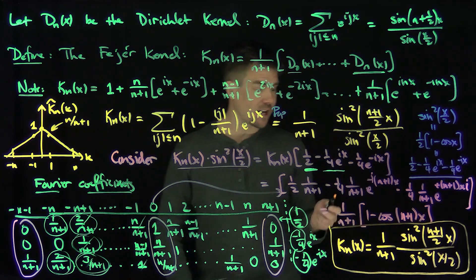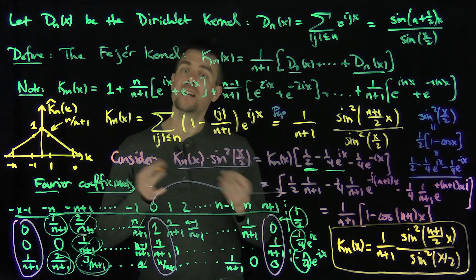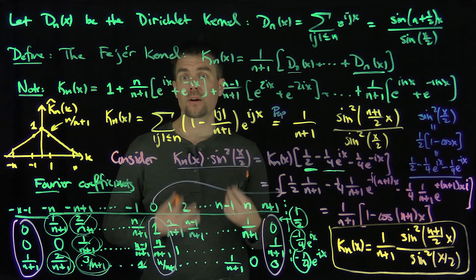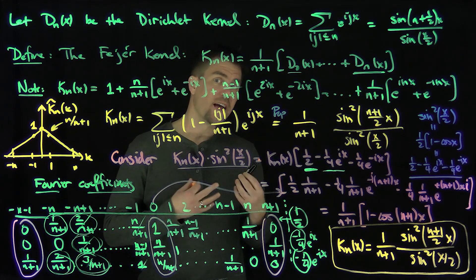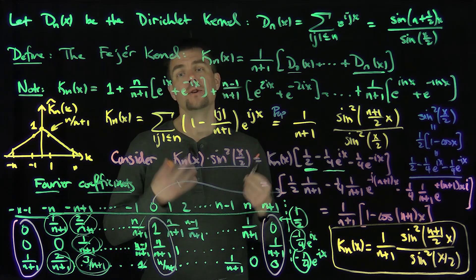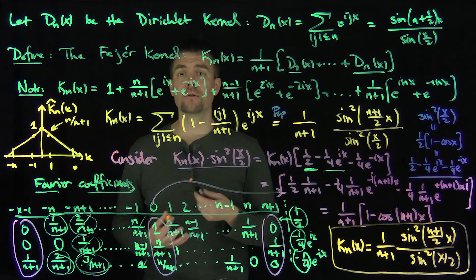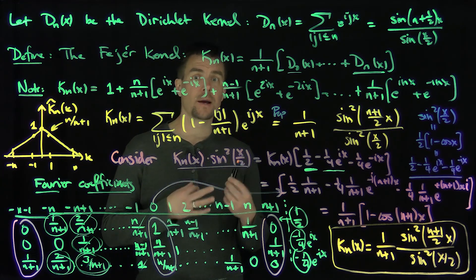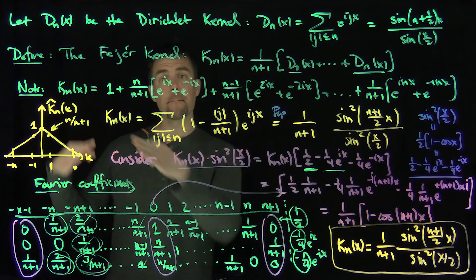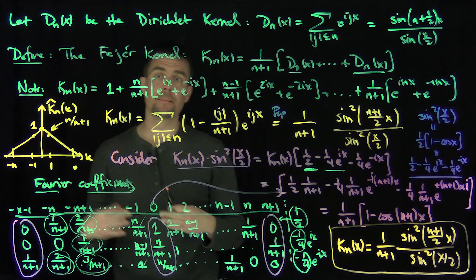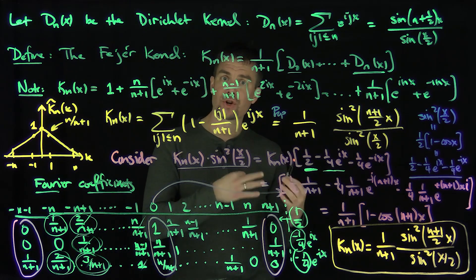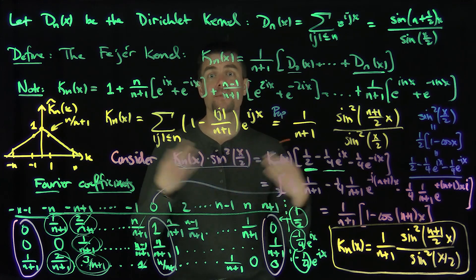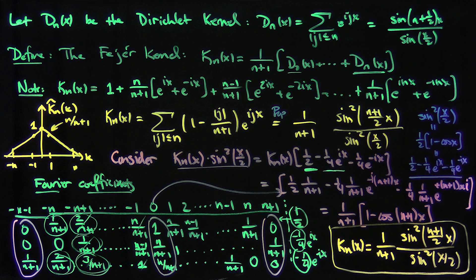This formula is very important in future videos. If we integrate the Fejér kernel over the unit circle and divide by 2π, we get 1, because each Dirichlet kernel integrates to 1, and therefore the Fejér kernel integrates to 1 and is non-negative. This makes it an approximation to the identity: convolution with the Fejér kernels yields trigonometric polynomials that converge at any point of continuity to the function. These averaged partial sums converge uniformly to the function if the function is continuous, whereas ordinary Fourier partial sums may not. Thank you very much.